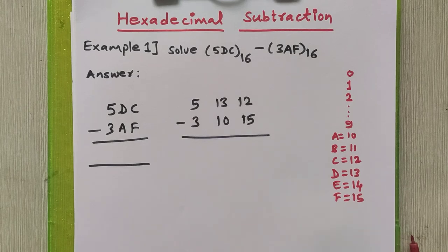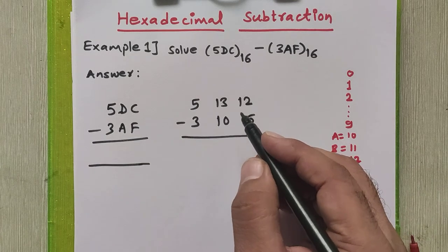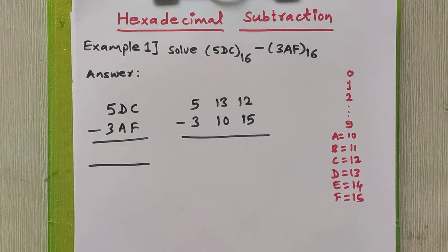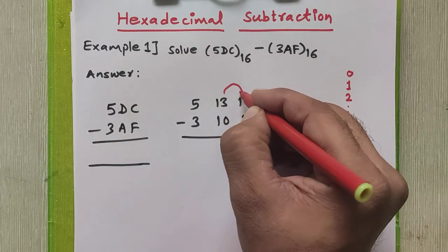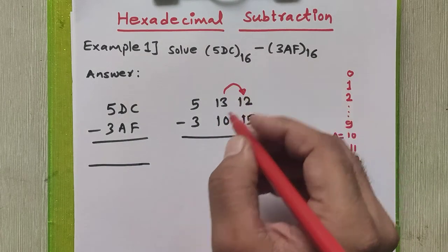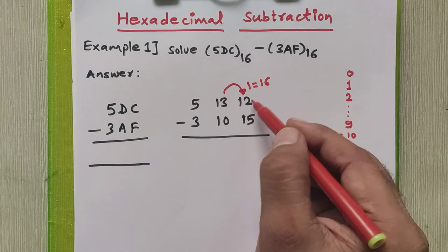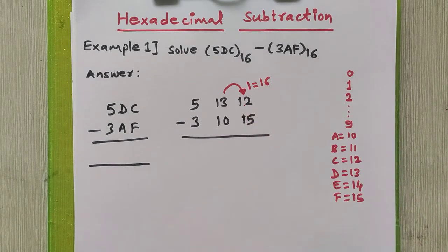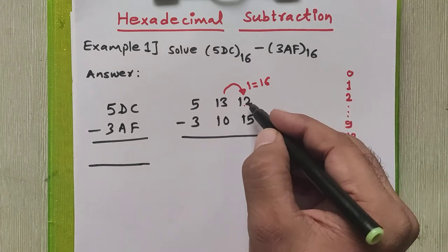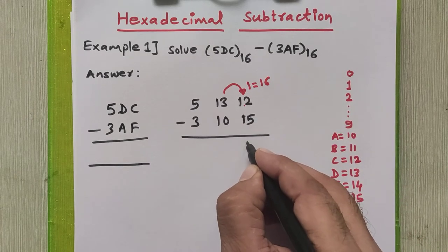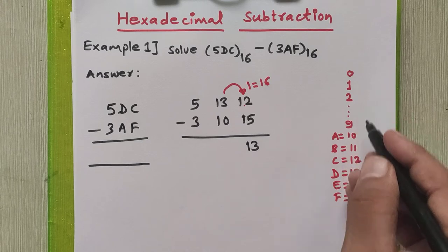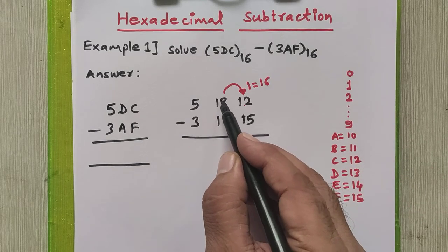12 minus 15 is not possible, so we need to take a borrow. Whenever we take a borrow in any number system, one borrow equals the base of that number system. In hexadecimal, one borrow equals 16. So we add 16 to 12, giving 28, then 28 minus 15 equals 13. Since 13 is a valid hexadecimal digit, we record it. We have taken one borrow from the next position.